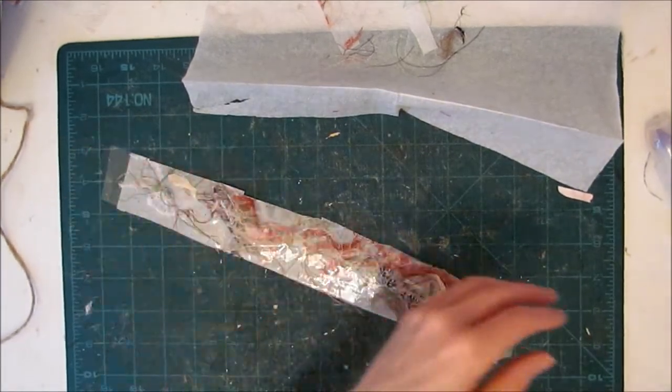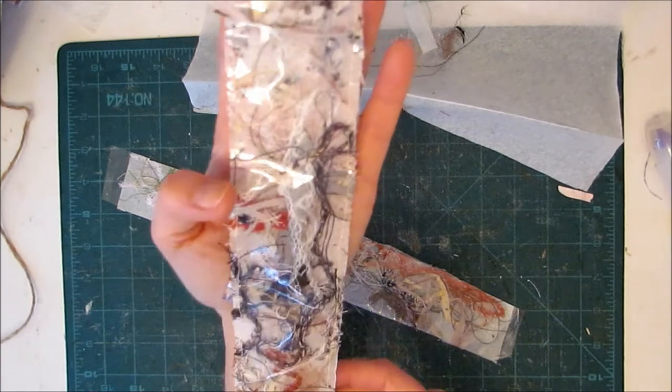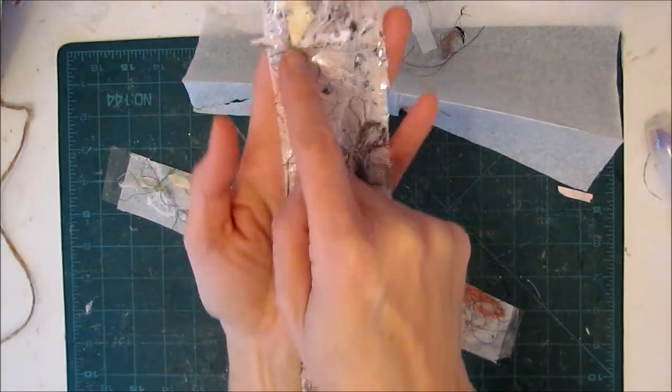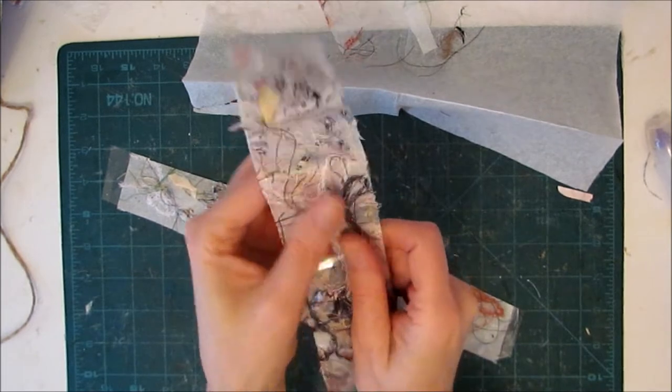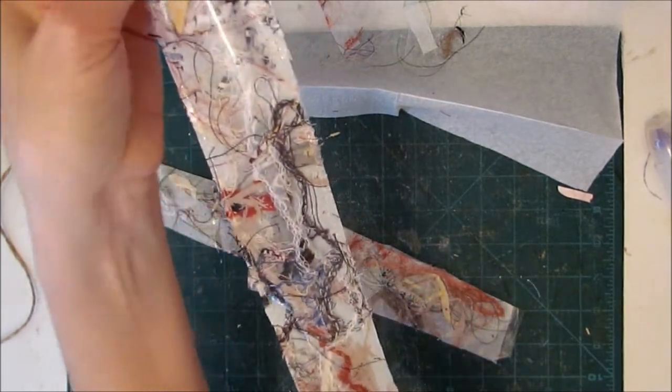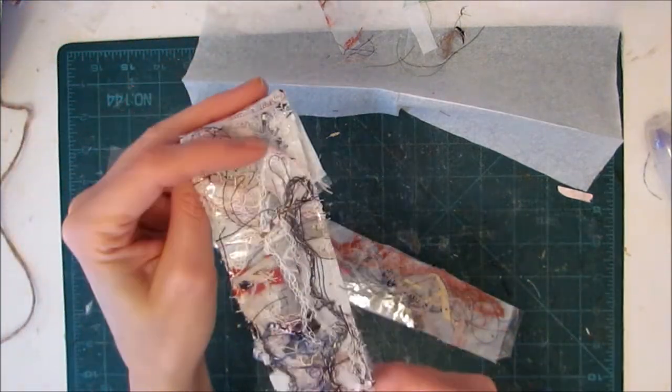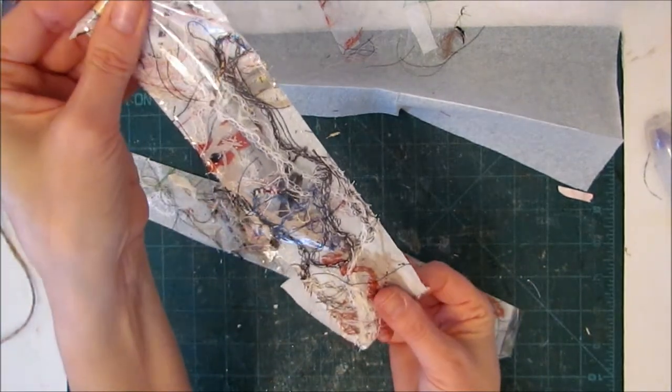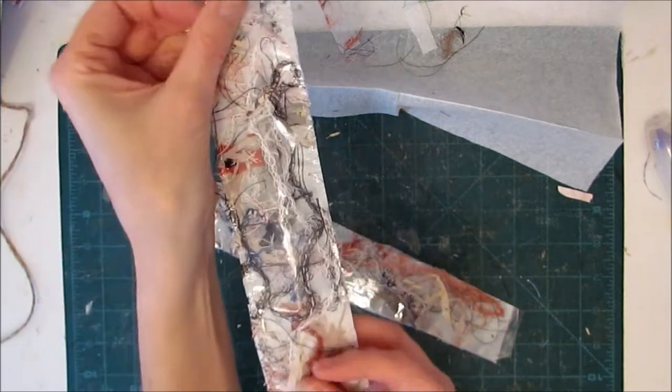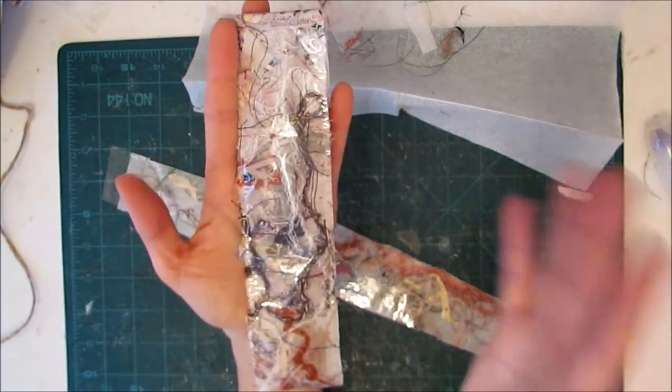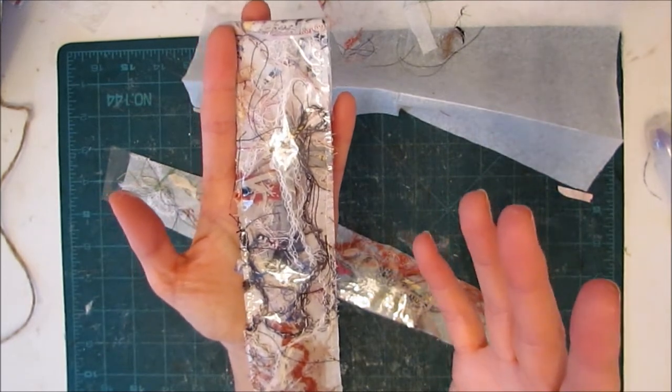So all you do is you take that over to your sewing machine and you sew along the edges to catch everything, basically creating like a little bag for all those bits and pieces. And then again, you just cut it where you need to, glue it down.